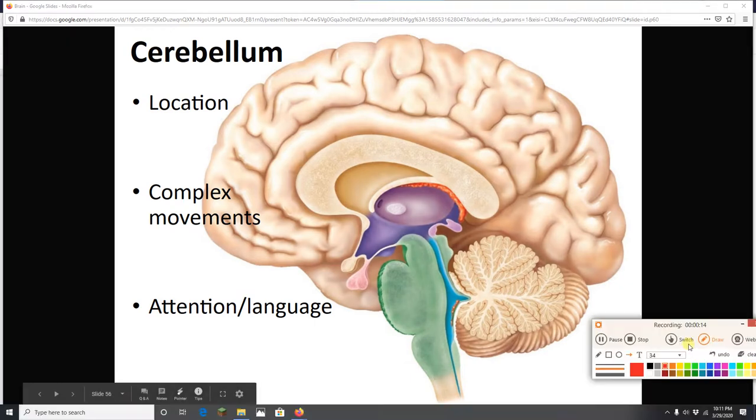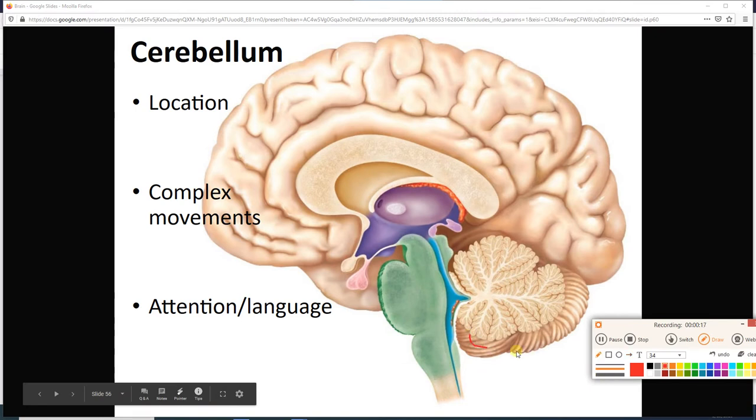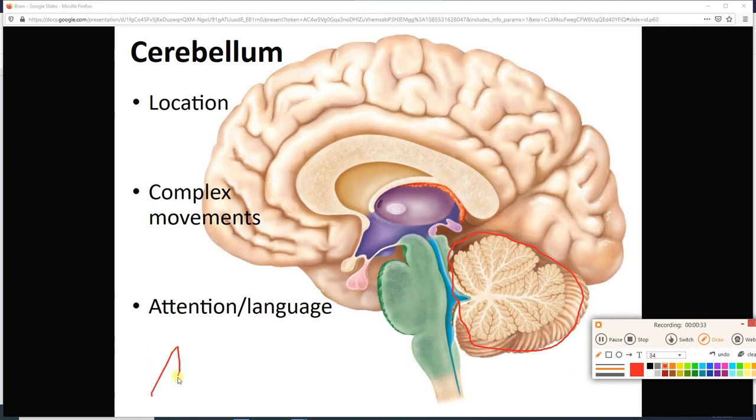The cerebellum is this semi-wrinkled looking structure just chilling down right here. We see it is just beneath the occipital lobe of the brain, posterior to the brain stem. We can see all of its little mini gyri and its white matter in there. Remember the white matter from lab, the white matter is called the arbor vitae.